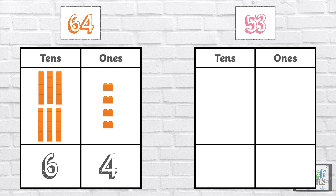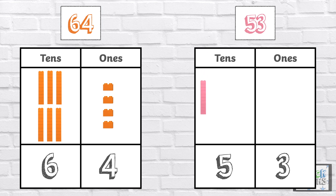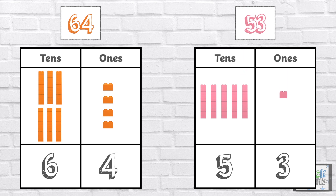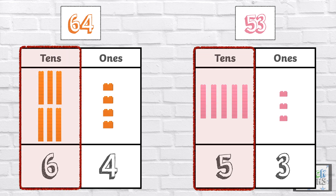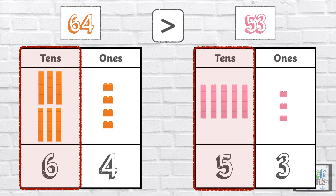The number 53 has five 10s and three 1s: 10, 20, 30, 40, 50, 51, 52, 53. Remember, when we compare numbers, we look at the 10s digit first. Six 10s is greater than five 10s, so 64 is greater than 53.